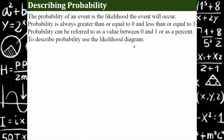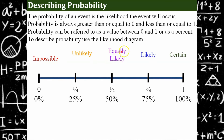Now we're going to describe probability. The probability of an event is the likelihood that the event will occur. Probability is always greater than or equal to zero and less than or equal to one. We can describe probability using five terms on a likelihood diagram. Starting in the middle: something is equally likely — for example, flipping a coin gives a fifty-fifty, or fifty percent, one out of two chance of heads or tails.